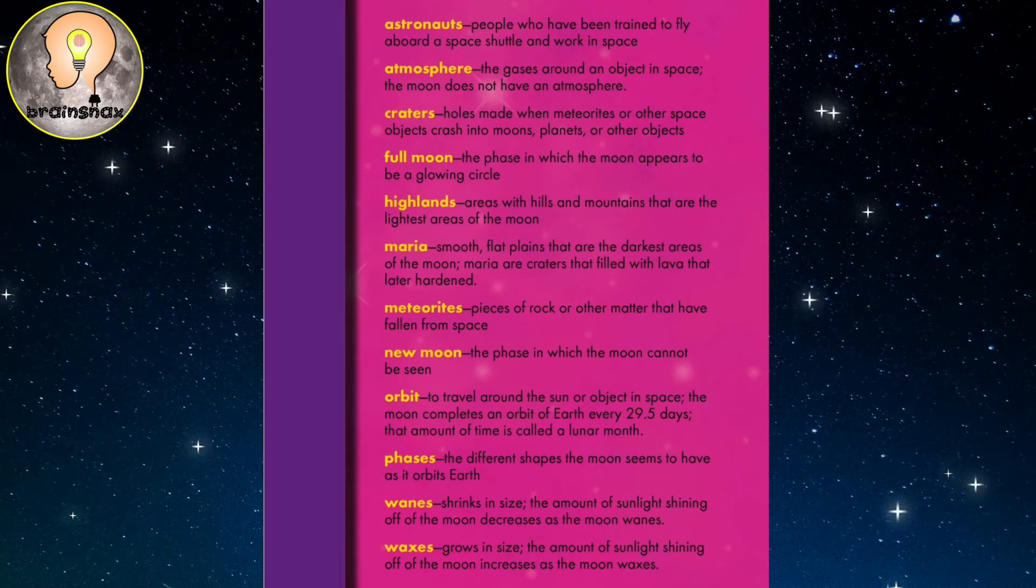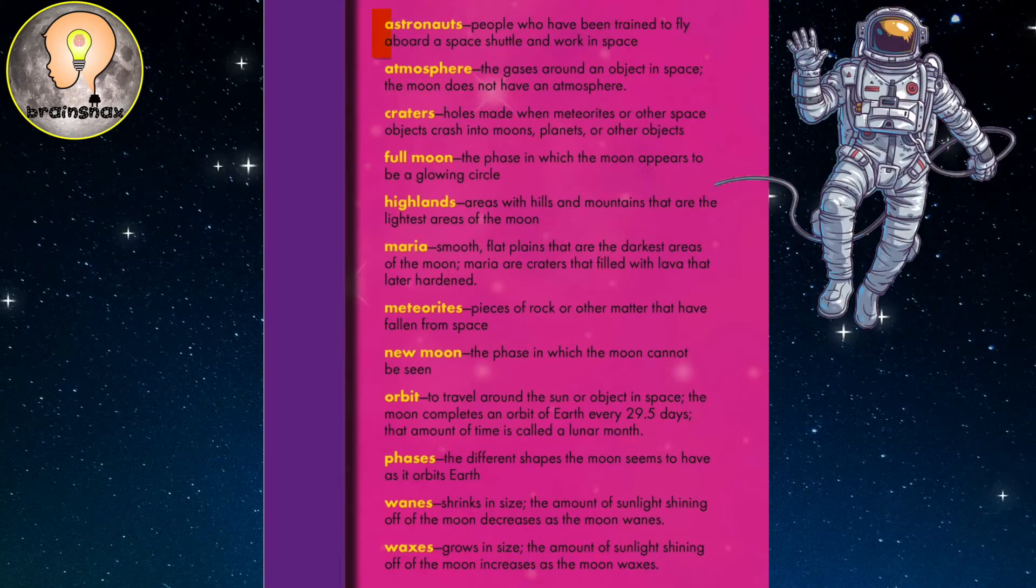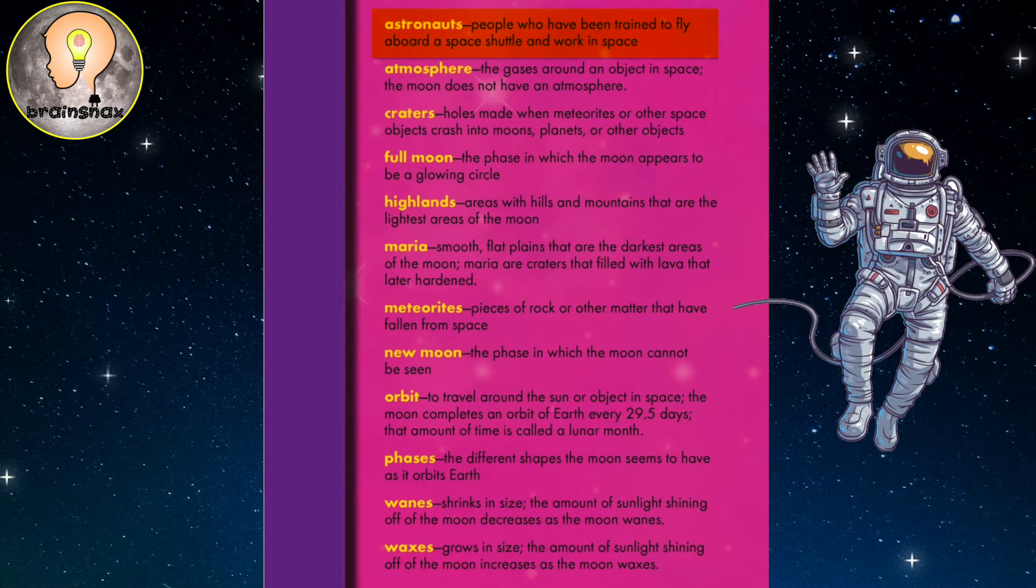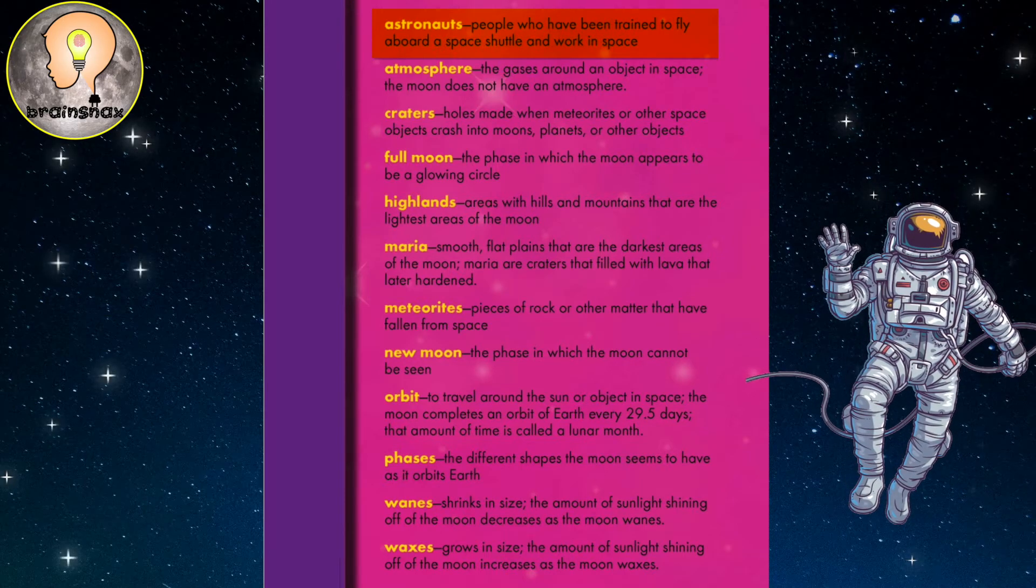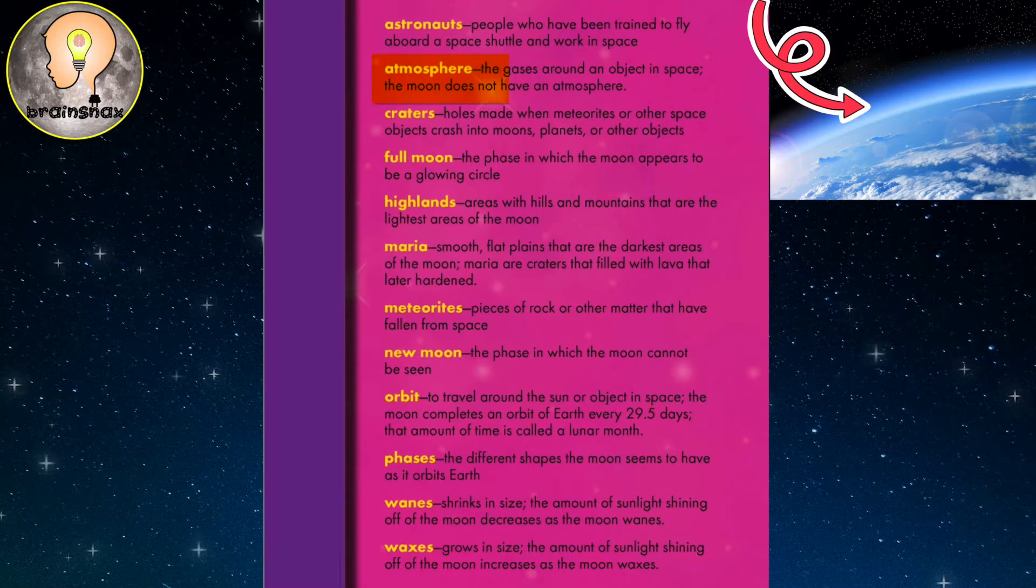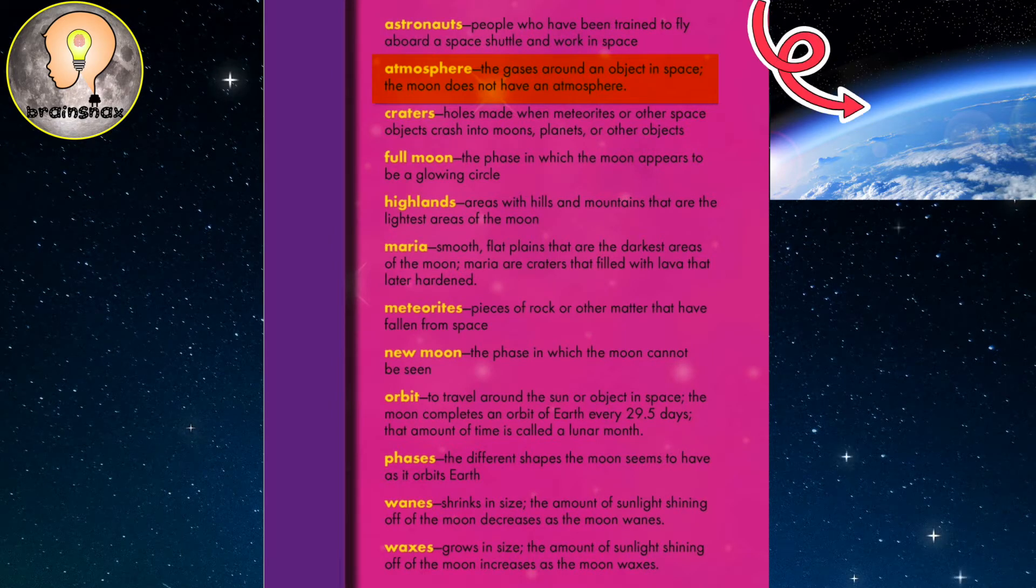Glossary. This is teaching us what some of the words mean. Astronauts: people who have been trained to fly aboard a space shuttle and work in space. Atmosphere: the gases around an object in space. The moon does not have an atmosphere.